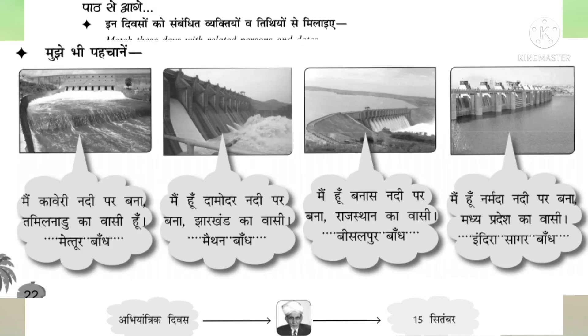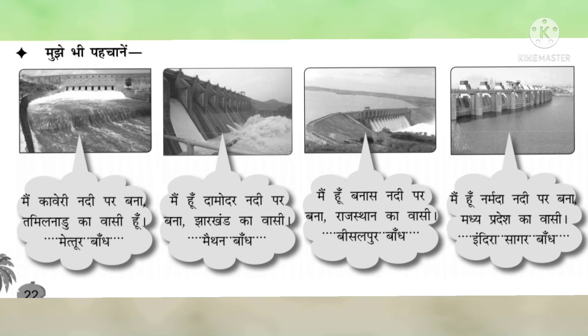Next activity: Mujhebi Pahuchane means Recognize Me. First picture: Main Kaveri Nadi par bana Tamil Nadu ka vaasi hoon — that is Mysore Dam. Second: Main Damodar Nadi par bana hoon, Jharkhand ka vaasi — that is Meithan Dam. Third: Main Banas Nadi mein bana Rajasthan ka vaasi — that is Bisalpur Dam. Last: Main Narmada Nadi par bana Madhya Pradesh ka vaasi — that is Indira Sagar Dam.